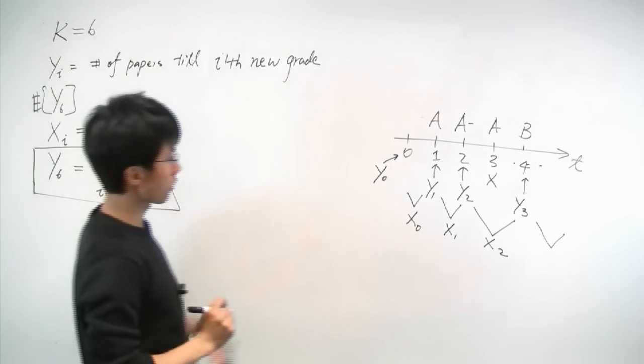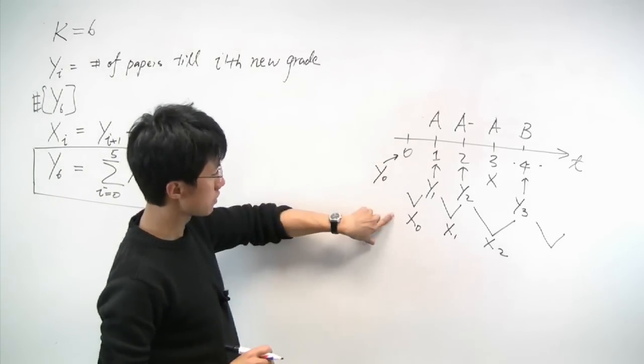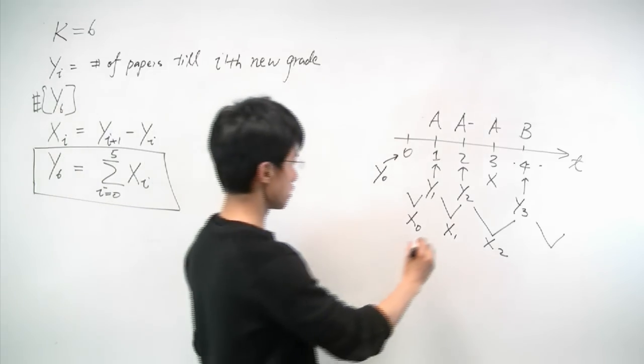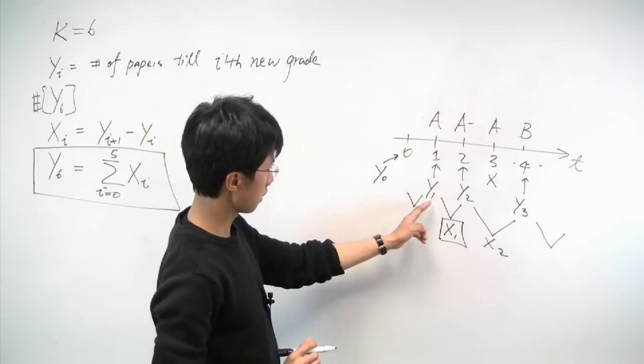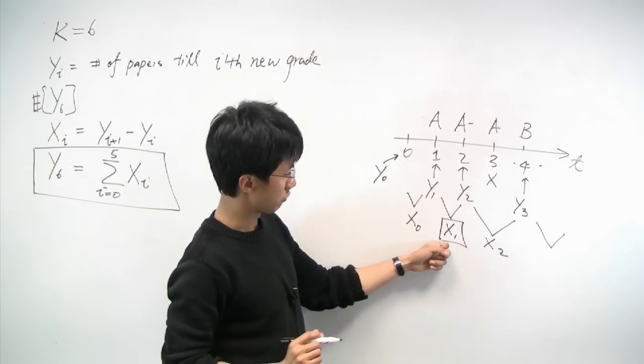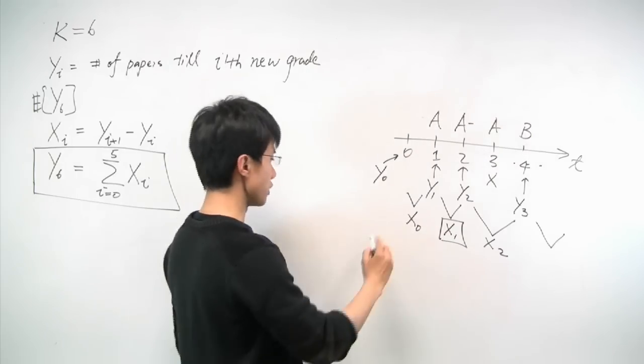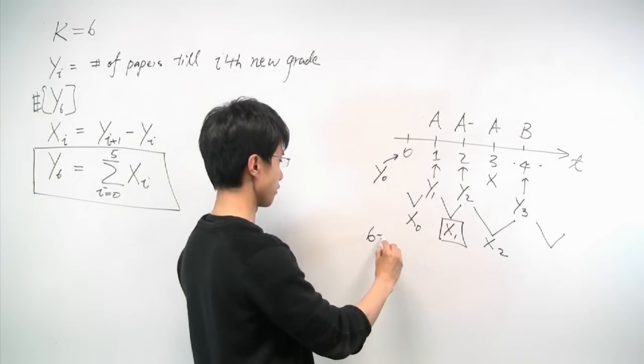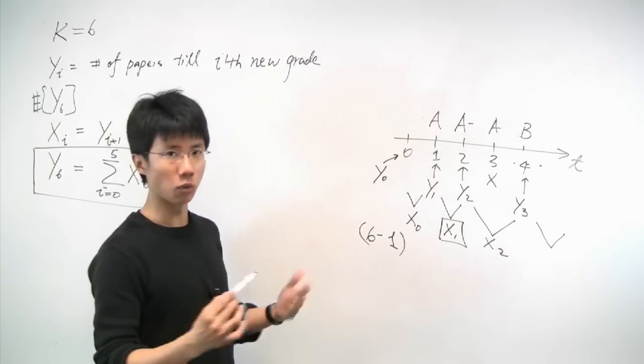So now that we have the two variables y and x, let's see if it will be easier to look at the distribution of x in studying this process. Let's say we have seen one new grade so far. How many trials would it take for us to see the second new grade? Turns out it's not that hard. In this case, we know there is a total of six grades, and we have seen one of them. So that leaves us five more grades that we'll potentially see.